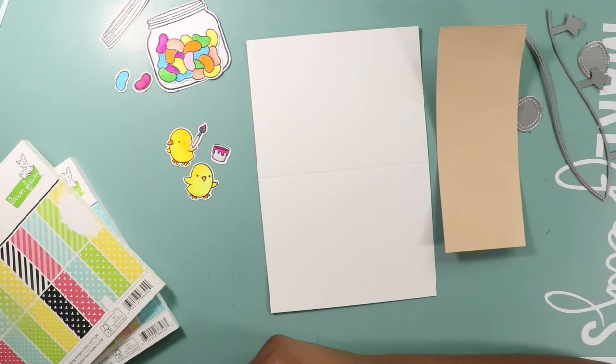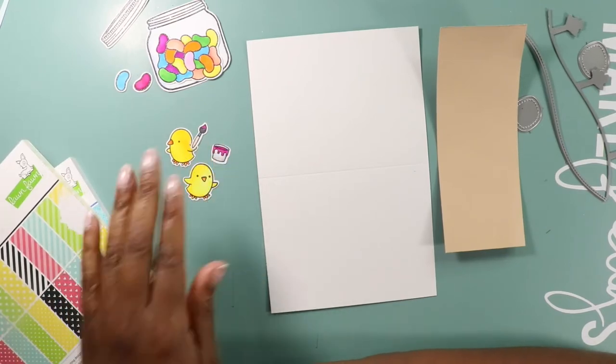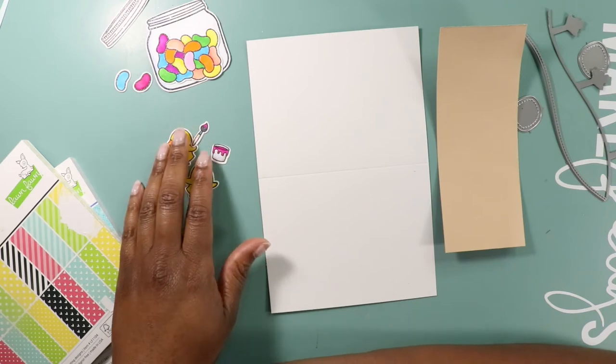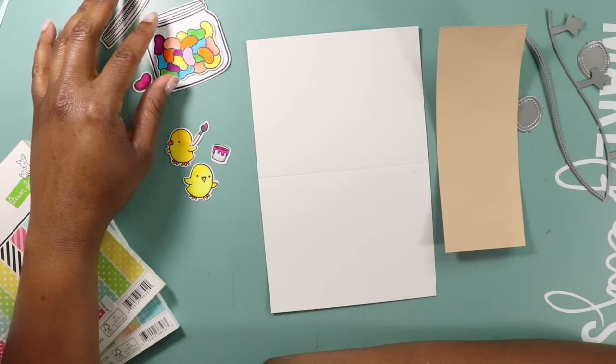I really do love this stamp set which is also a Lawn Fawn stamp set called Chirpity Chirp Chirp. We're just going to combine the stamp sets together and see what we end up with. I'm starting by selecting my paper.